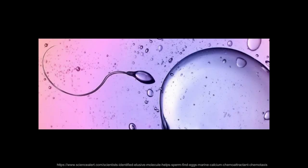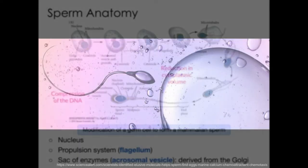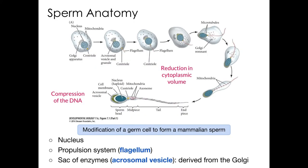Before we discuss the processes at play during fertilization, let's begin by looking at the morphology of the germ cells. The sperm have to be able to migrate to the egg, and to do that effectively the sperm shed most of their cytoplasm during the process of maturation. The DNA of the sperm also becomes tightly compacted, and that actually helps to streamline the nucleus.